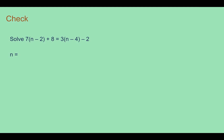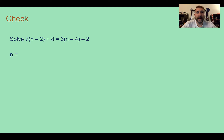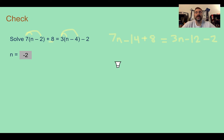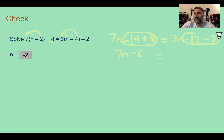Check your understanding answer: you should have found n was equal to negative 2. First, distributing out: 7n minus 14, then still have plus 8 at the end. On the other side, 3 times n and 3 times negative 4 is negative 12, with minus 2 on that side. Next, simplify: negative 14 plus 8 is negative 6, so on the left I'm left with 7n minus 6. On the right, negative 12 minus 2 gives 3n minus 14.